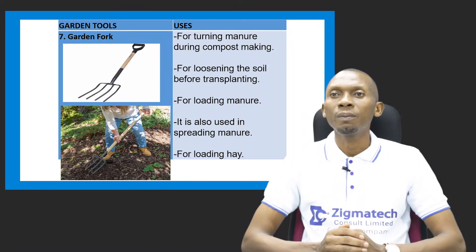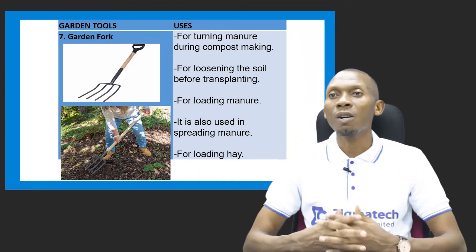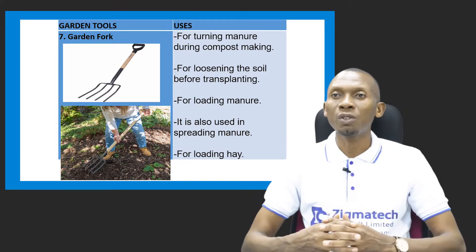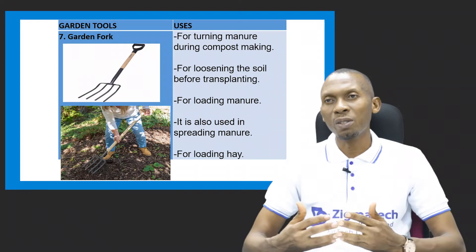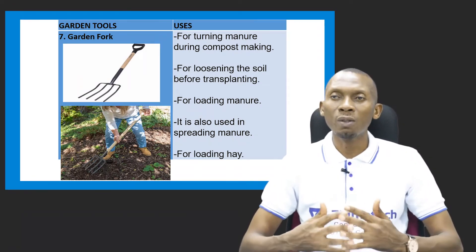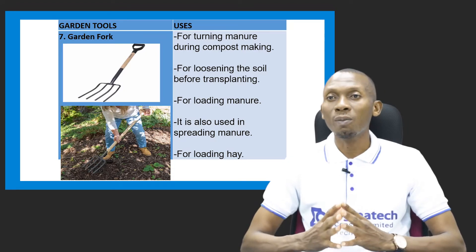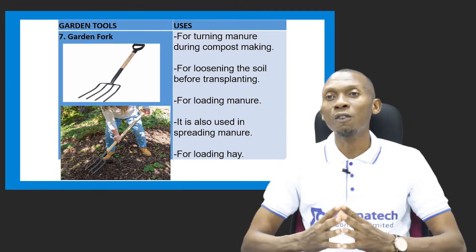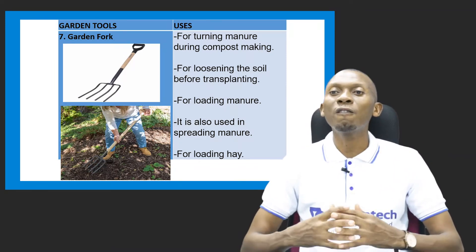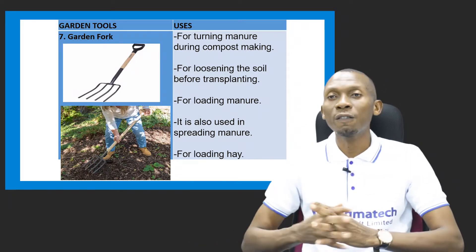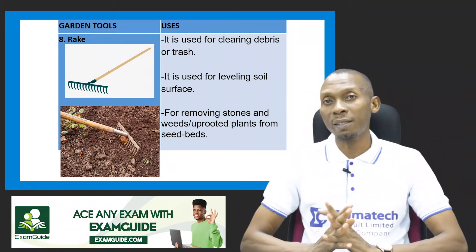We have the garden fork, which is like a bigger version of the hand fork. It is used for turning manure during compost making — the rotting down of plant and animal residue in a pit. It can also be used for loosening the soil before transplanting seedlings from the nursery to the main field, for loading and spreading manure, and for loading hay.